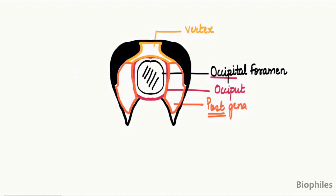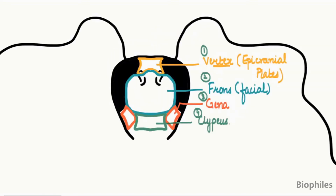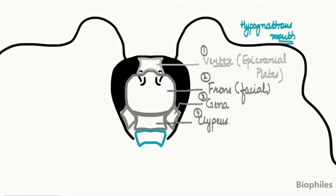Next we move on to the different appendages present on the head. The appendages on the frontal side include the antennae. The other appendages constitute the mouthparts of the cockroach, which are present towards the tip of the head and directed towards the ventral side — such mouthparts are referred to as hypognathous mouthparts. The first mouthpart visible from the frontal side lies just below the clypeus and is called the labrum, or the upper lip.